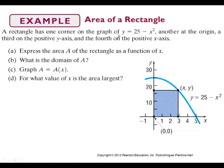It has one corner on the graph for y equals 25 minus x squared. So this parabola equation is y equals 25 minus x squared. And so we have a rectangle that has one corner on the parabola.